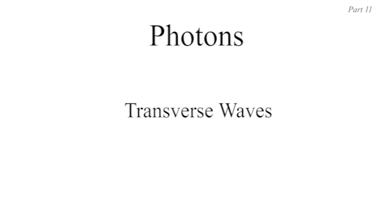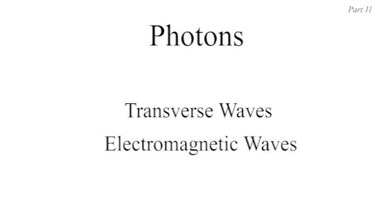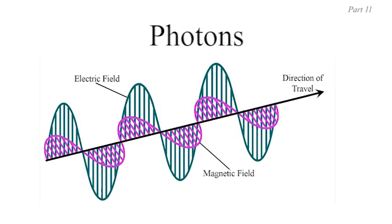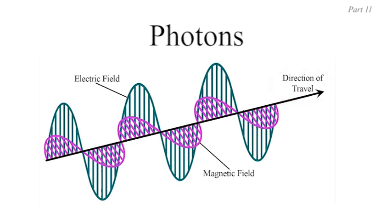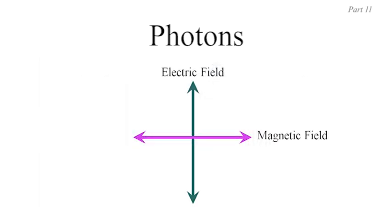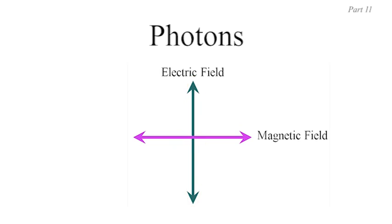What is it about these two photons that we consider to be entangled? We're not going to focus on their spin but rather on their linear polarization. Most people know that photons can be considered transverse waves with some particulate nature — electromagnetic waves that can be thought of as oscillations in the electric and magnetic fields. The electric field oscillation and the magnetic field oscillation are at right angles to each other and both at right angles to the direction of travel, making this a transverse wave.